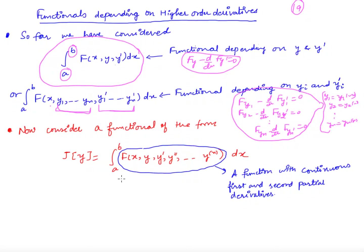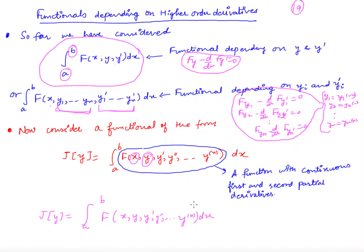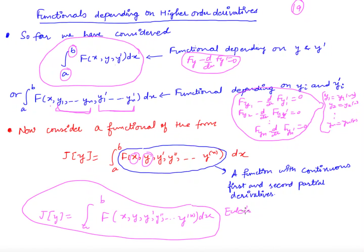Now we want to look at the case where we have only one dependent function of the independent variable x, but we have not only y' involved — we also have y'', y''', up to the nth derivative. We want to look at the functional where the integrand contains y, y', y'', and so on up to y^(n). We would like to know what the Euler's equation will look like for this particular case.